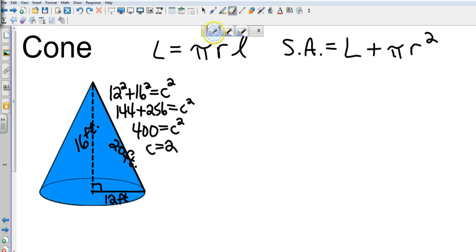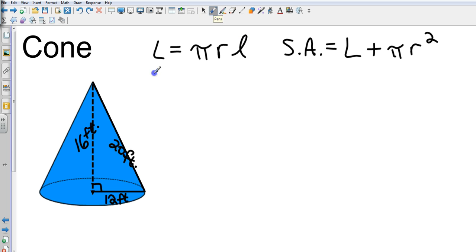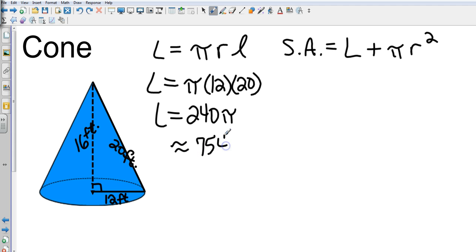Now that gives us lateral area equals pi times the radius, which is 12, times the slant height, which is 20. So that's going to be 240 times pi. Again, this will be an approximation. So the lateral area is approximately 754 square feet. Again, that's rounded to the nearest tenth because I got 0.98. That's going to round that up.